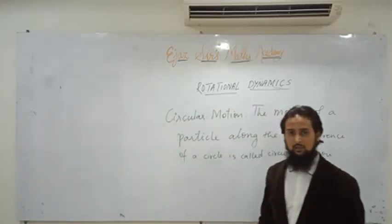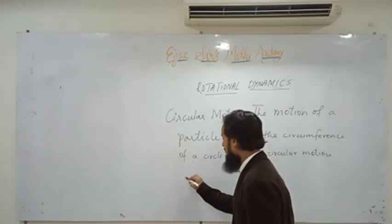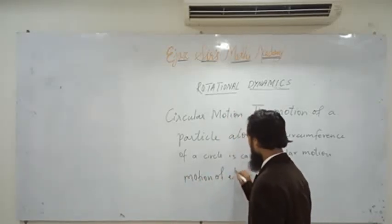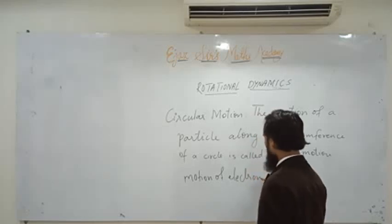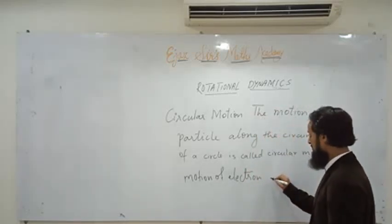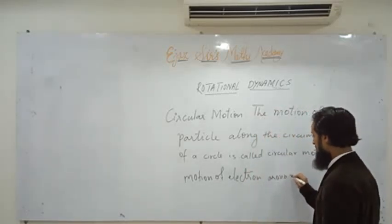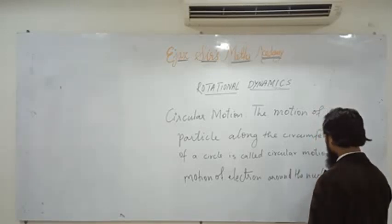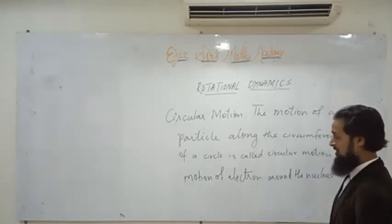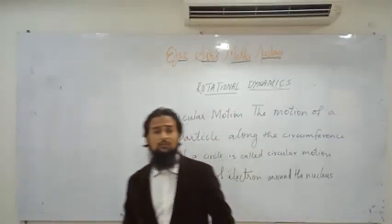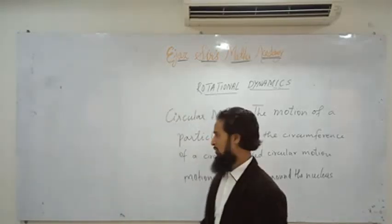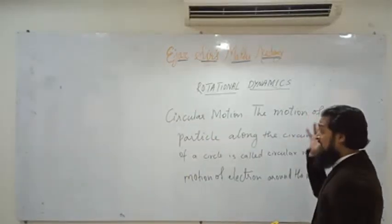Can we give an example of circular motion? The motion of an electron around the nucleus in a hydrogen atom. So the motion of a particle along the circumference of a circle is called circular motion. Now circular motion has two types.